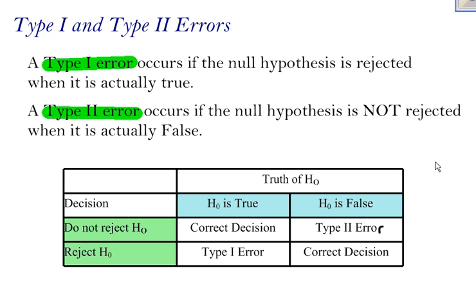Now one last thing about type 1 and type 2 errors. You will never know if you have made a type 1 or a type 2 error. Because if we knew if the null hypothesis was actually true or actually false, then we wouldn't have to perform the hypothesis test. If we already knew that the null hypothesis was true, we could just stop right there and say it's true. And if we knew that the null hypothesis was false, we could stop right there and say it was false.